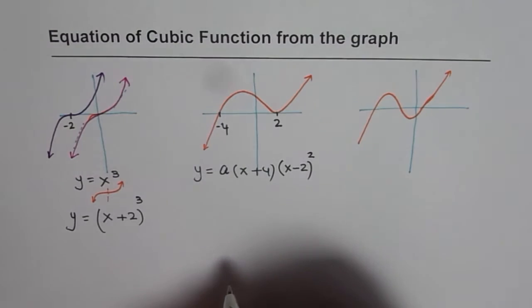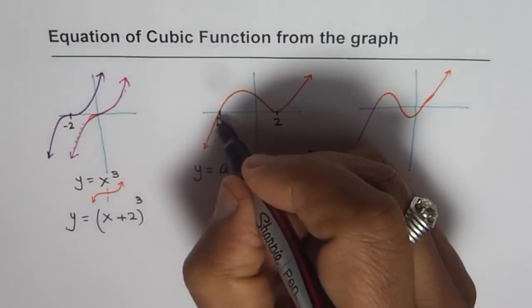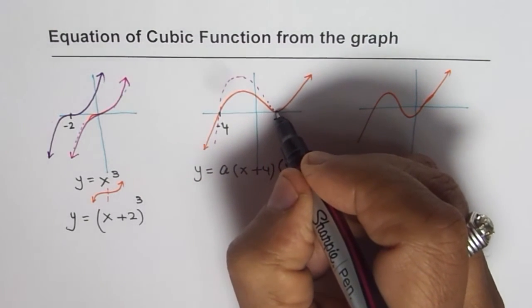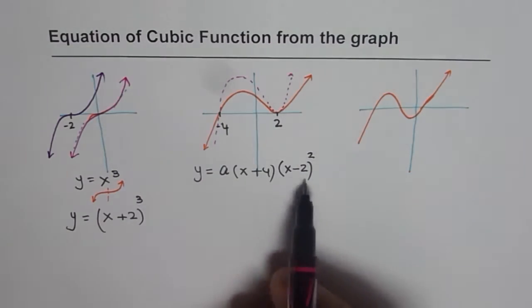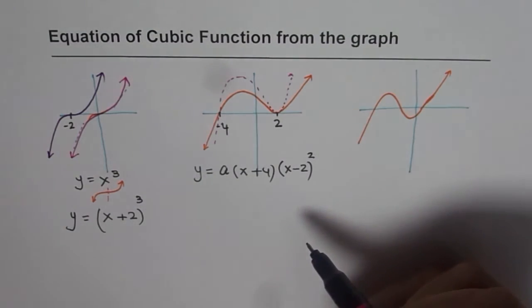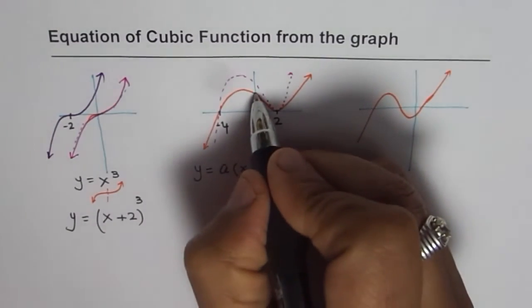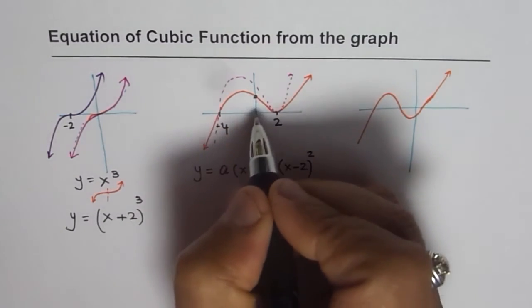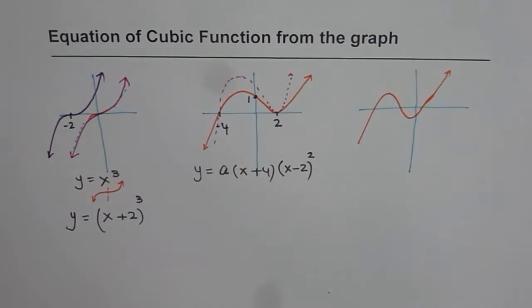So a is any graph. What I'm trying to say is another graph which is going through this could be kind of like this. That will also have a similar equation since it has same zeros. But both of them are different graphs. To get the equation of this specific graph, we have to look for a point on the graph. So let us say we have this point and this point is at y value of 1. For simplicity, I am taking such numbers.